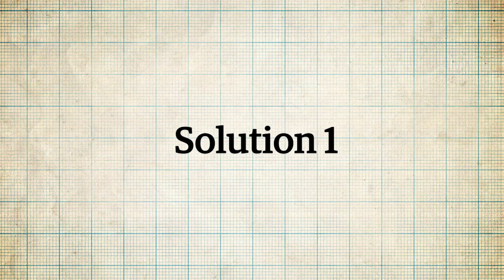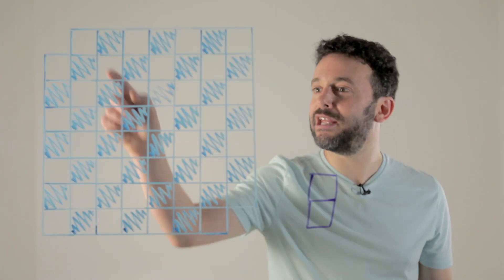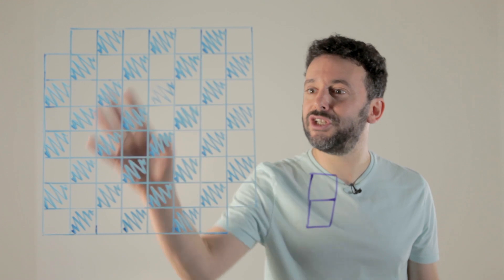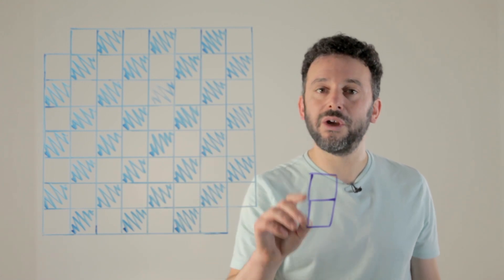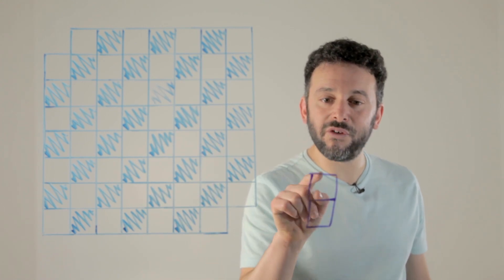This was the first one, the classic. The chessboard looks like this and the question is, can you cover it perfectly with 31 dominoes of this size here?